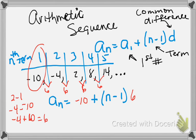Now, we're going to simplify this just so we can get an equation. So I'm going to distribute the 6 to the Ns. And so when I rewrite this, I'm going to have AN equals negative 10 plus 6N minus 6.